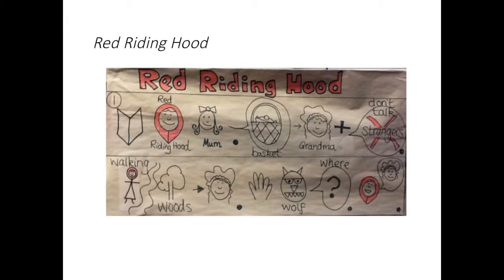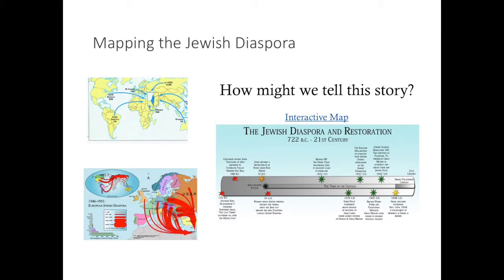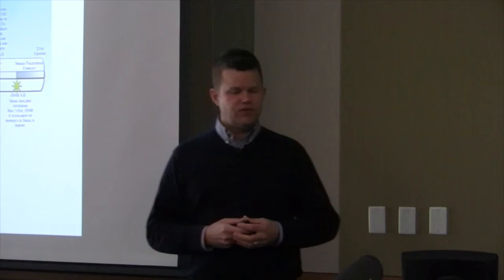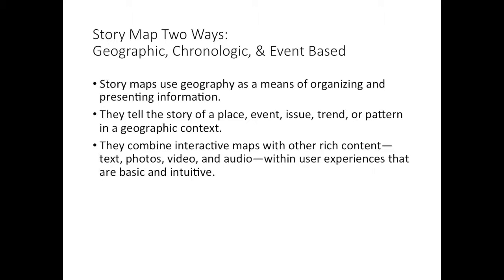The idea that these characters existed in particular moments in history but in particular regions of the world — we were going to use a story map as a learning tool so students could more clearly organize their thoughts around the artifacts we had discovered. We asked students: how do you tell a story? How do you break it down into its component parts? We started off with Little Red Riding Hood. Think of it as formalistic or structuralist — what are the consistent elements of a story? Then we asked students to think about something more complex — how do we tell a story that's much broader?